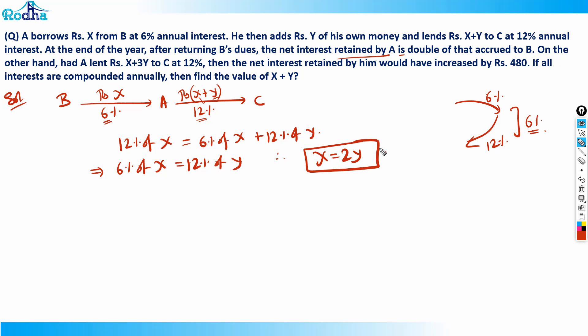On the other hand, had A lent rupees X plus 3Y to C at 12 percent — in the first case he lent X plus Y, and now he would lend X plus 3Y — the extra amount lent is 2Y. So 12 percent of 2Y is the difference in interest earned, and that difference equals 480. Therefore, 12 percent of 2Y equals 480.